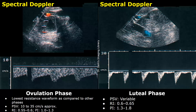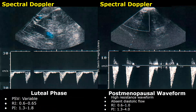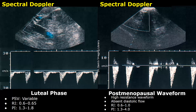In post-menopausal women, the waveform has the highest resistance. This is because less blood is required by the ovaries and there is a lack of significant hormonal stimulation. We will find absent diastolic flow and very sharp systolic peaks. The resistive index values can be between 0.6 to 1, and the pulsatility index can be between 1.3 and 4.